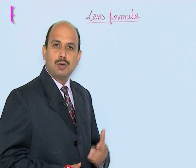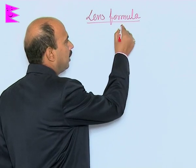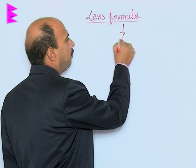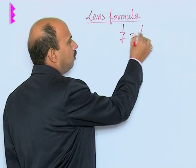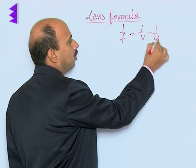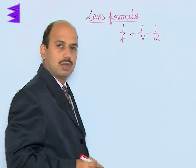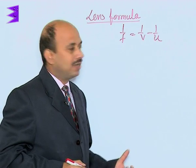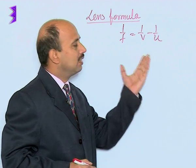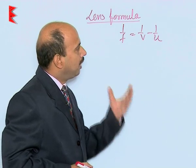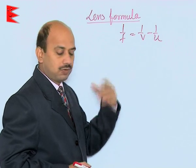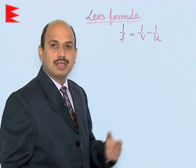Now, see the lens formula. The lens formula is actually a relation between the focal length, object distance, and image distance. It is 1/f = 1/v − 1/u, whether it is a concave lens or convex lens — in both cases the formula is the same. So, now we have to derive this formula, that is the lens formula.